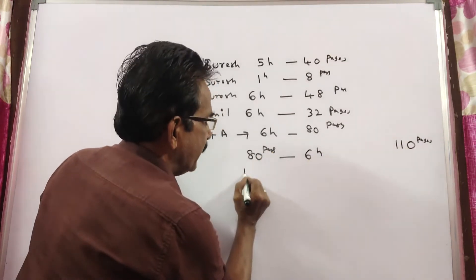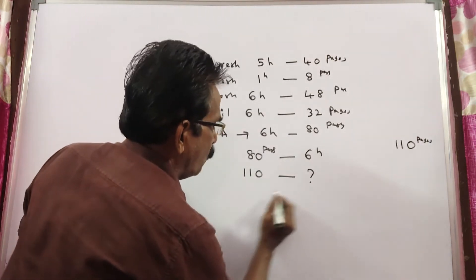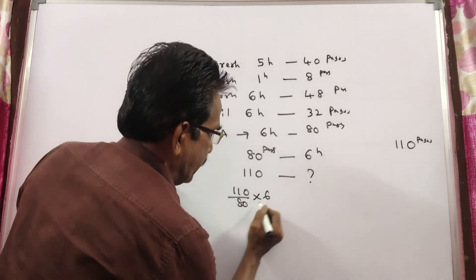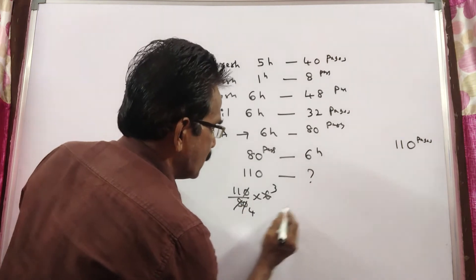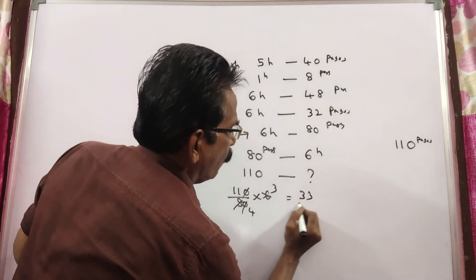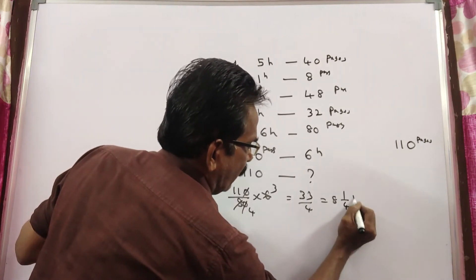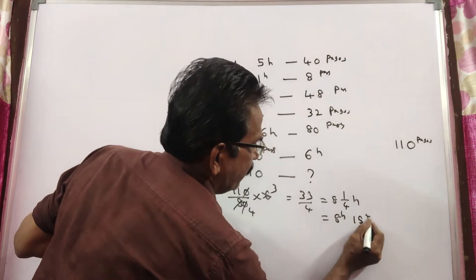Now they need to type 110 pages. 110 pages, how much time? 110/80 × 6, cancel zeros, gives 33/4. 8 goes into 32, so 8 and 1/4 hour, or 8 hours and 1/4 hour means 15 minutes.